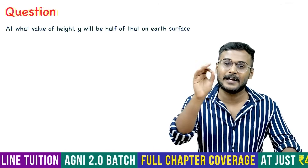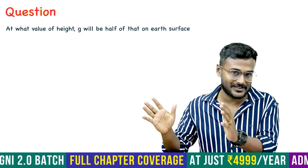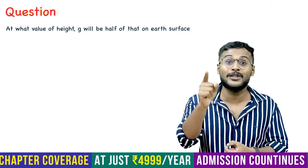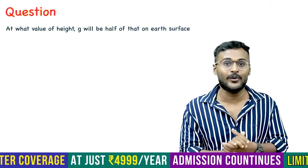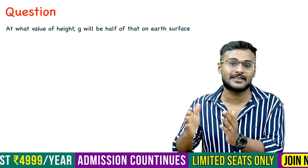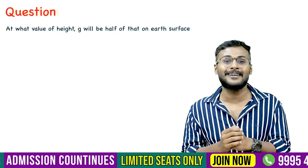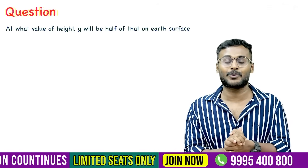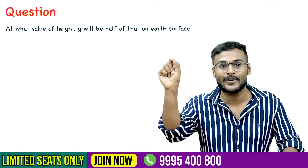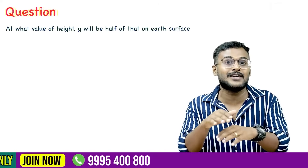We have to find a height. I will proceed with this formula. I will be able to apply this formula because for the variation of G with height, we will learn two formulas. G dash equal to G into 1 minus 2H by R.